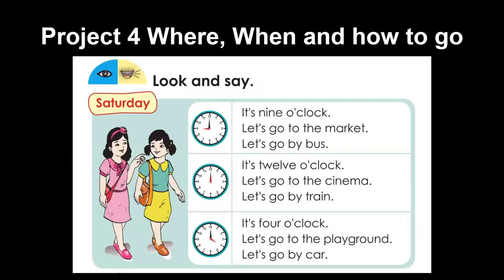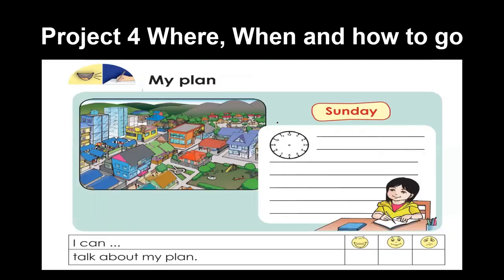Now let's look at where to go and how to get there. Look at the time — what time is it? It's Saturday and it's nine o'clock, so they are going to the market. Let's go to the market by bus. It's twelve o'clock — let's go to the cinema by train. It's four o'clock — let's go to the playground by car.